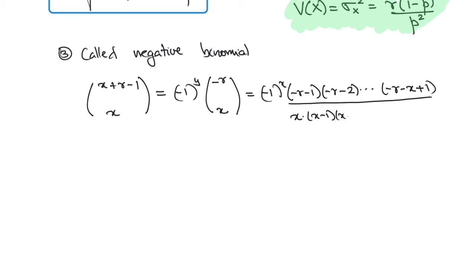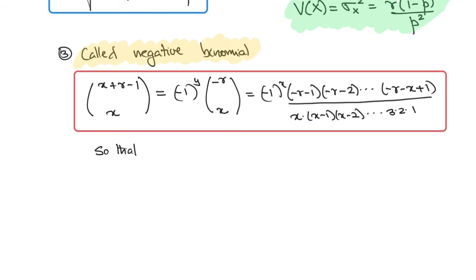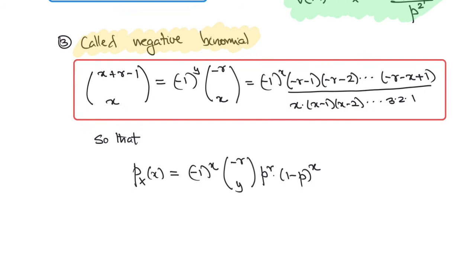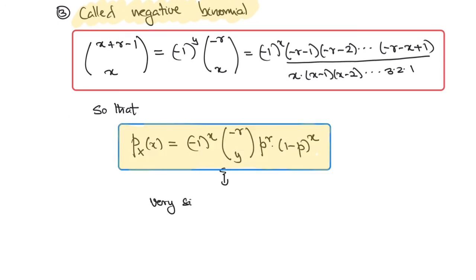This distribution is called the negative binomial distribution because x plus r minus 1 choose x can be written as minus 1 to the x times minus r choose x. So putting this into the distribution function, p of x equals minus 1 to the x times minus r choose x times p to the r times 1 minus p to the x. Note there is a typo in the video. This is very similar to the PMF of the binomial distribution.